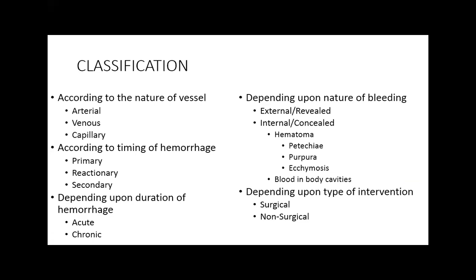Let's talk about the nature of the blood vessel. When we are talking about arterial hemorrhage, the pressure in the blood is very high — coming from the heart. Because there is high blood pressure in the arteries, the blood coming from the heart is a bright red color, and it is very difficult to stop the bleeding from arterial blood loss.